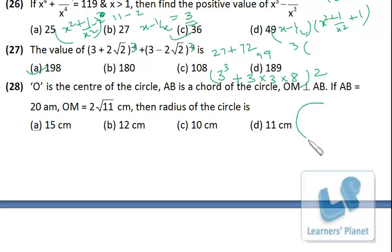I just draw the circle. O is the center of the circle. AB is a chord. OM is perpendicular to AB.